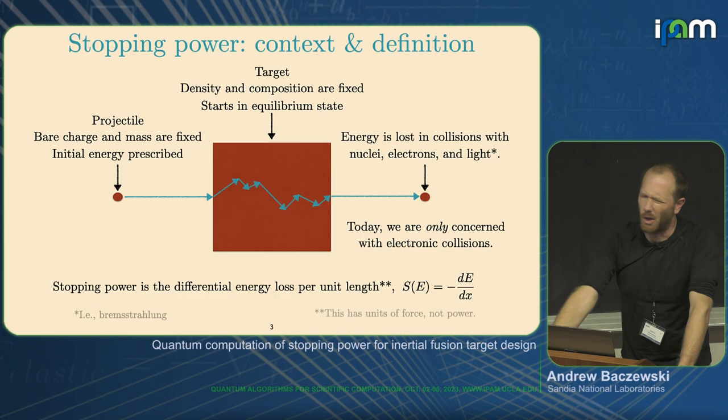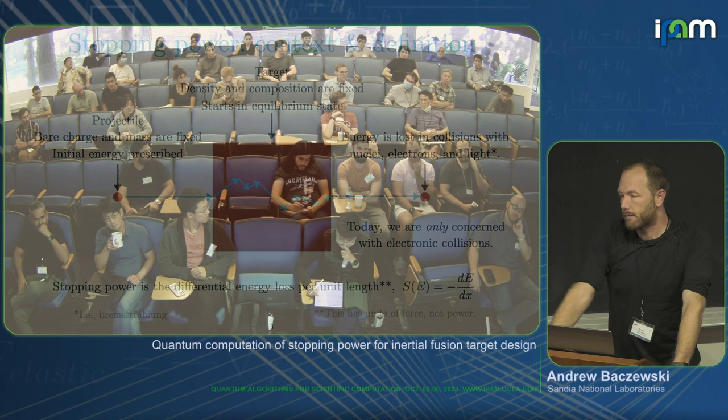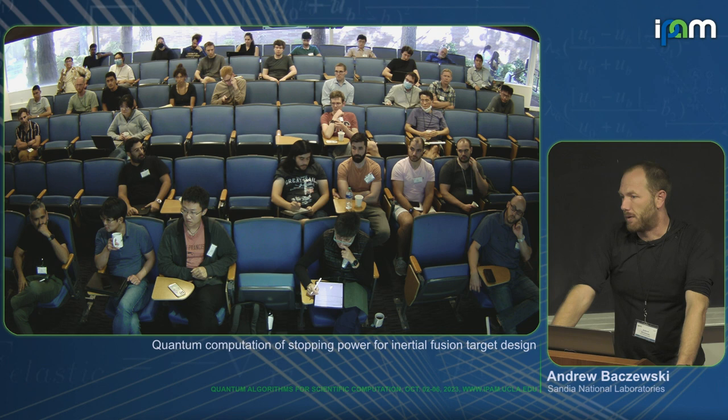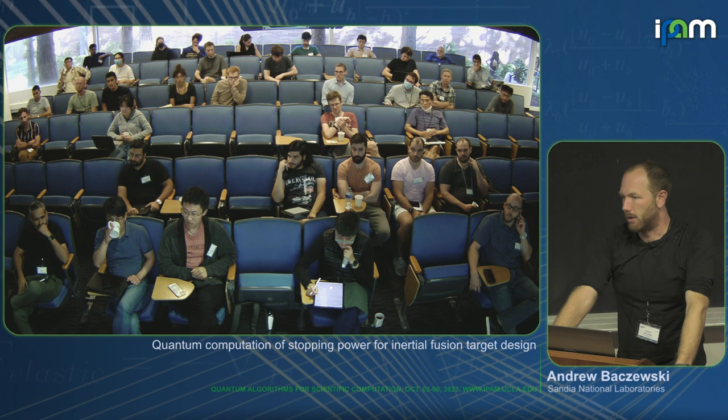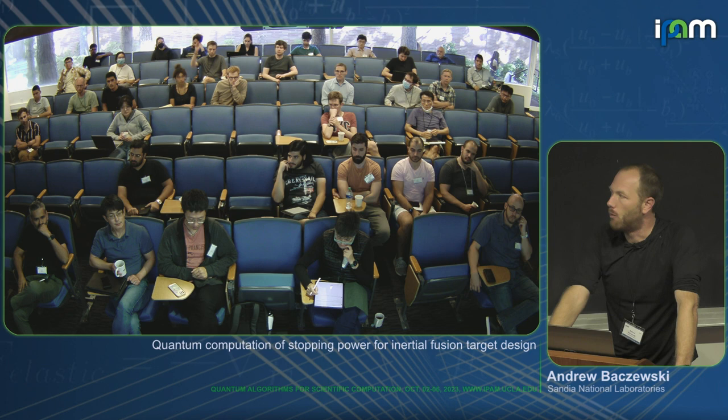Q: Are the initial energies relativistic or non-relativistic? They can be relativistic — tens of kilo-electron volts occurs on the low end, but you can go all the way up to MeV or GeV. We're not going to be considering relativity today, though.